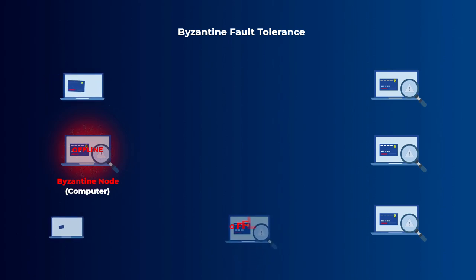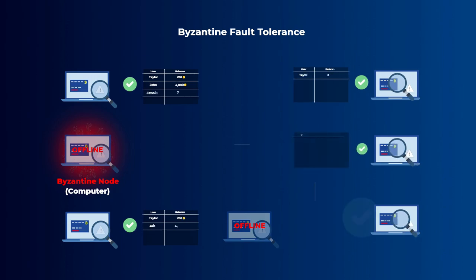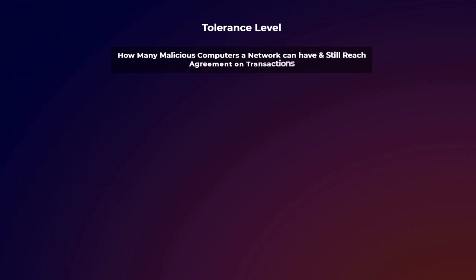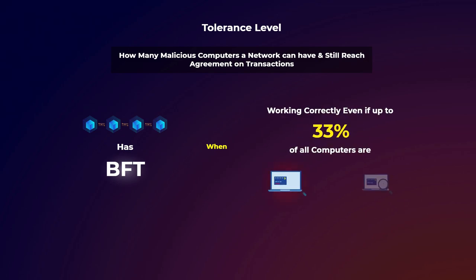So it may start getting clear now — the Byzantine fault tolerance concept means the ability of a network to continue working correctly and reach agreement, even when there are some Byzantine faults, which simply mean malicious or offline computers. The tolerance level of a blockchain is measured by how many malicious computers it can have and still reach agreement on processed transactions. You may hear that a network or blockchain has Byzantine fault tolerance when it can continue working correctly even if up to 33% of all computers are malicious or offline. Of course, some networks can tolerate more than 33%, but it depends on the consensus mechanism used.